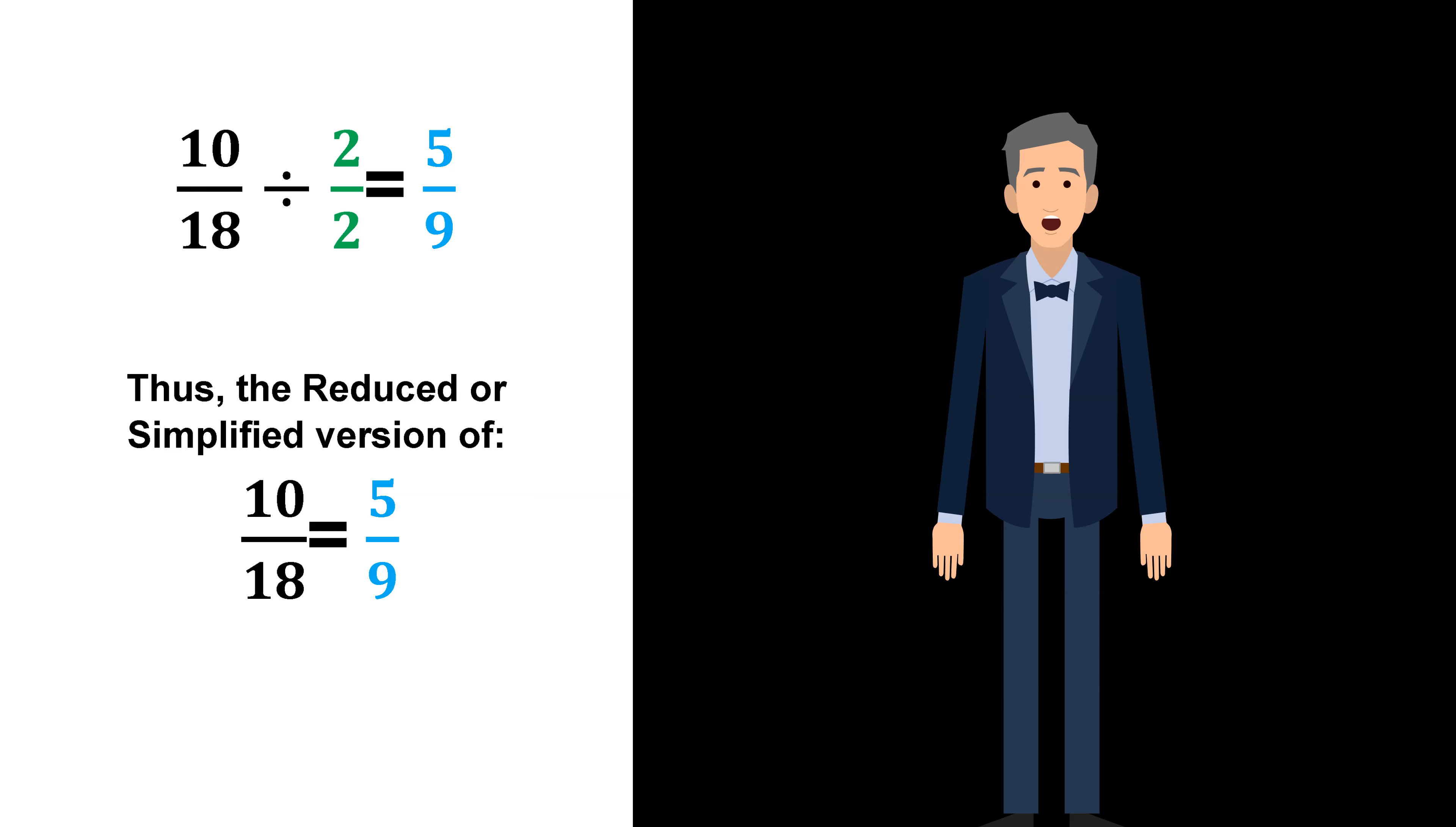Thus, the reduced or simplified version of 10 18ths equals 5 9ths.